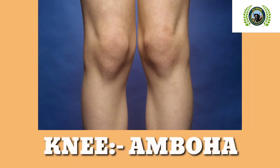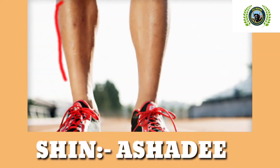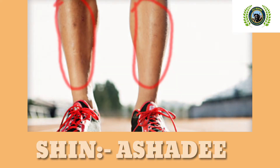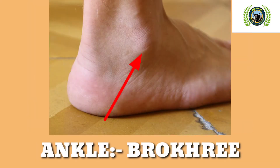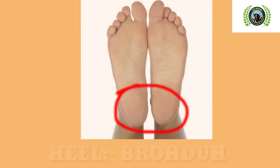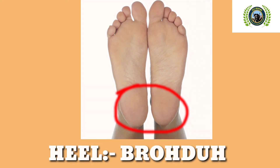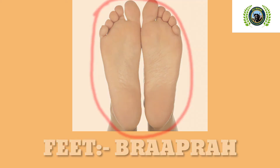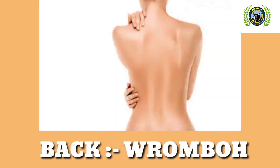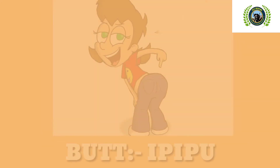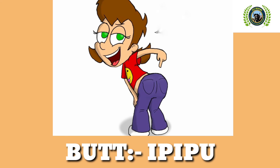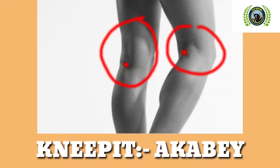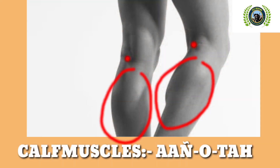Knee — Anupu. Shin — Asadi. Ankle — Brokri. Heel — Brodo. Feet — Brah. Toes — Atakabe. Calf muscles — Aota.